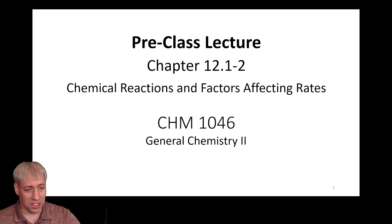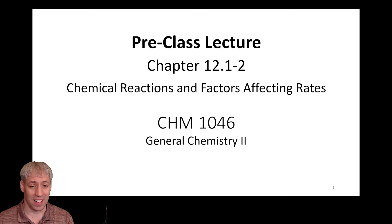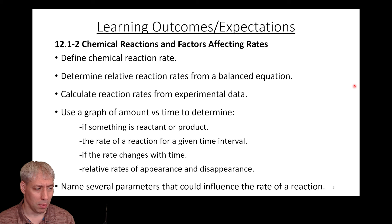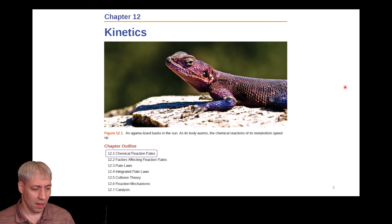Today we start our journey in chapter 12, which is chemical kinetics, and we'll start with chemical reactions and factors affecting rates. Here you can see our learning outcomes and expectations. Feel free to pause. The first section, 12.1, is on chemical reaction rates.